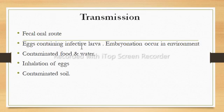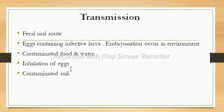Transmission of Ascaris lumbricoides occurs through fecal-oral routes. The eggs containing larvae undergo embryonation in the environment in humid and warm places. Transmission occurs mainly by ingestion of contaminated food or water containing eggs, and occasionally by inhalation of contaminated dust. Children playing in contaminated soil may also acquire the parasite from their hands.